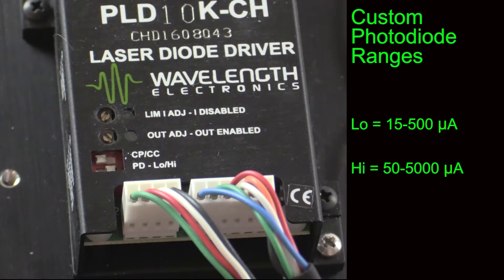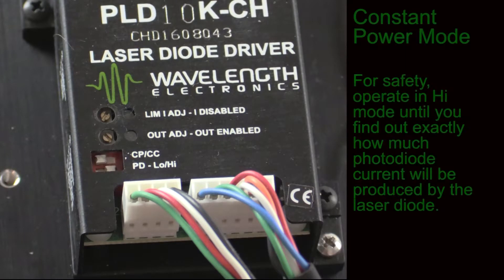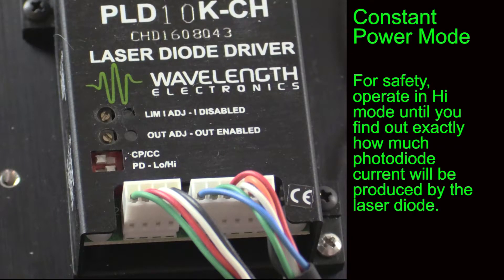Reference the laser diode datasheet for the internal photodiode current. Note that the datasheets often provide only an approximation. For safety, we recommend that the first time you wire up the laser diode and photodiode, you operate in high mode until you find out exactly how much photodiode current will be produced by the laser at the desired operating power. Select the desired range.